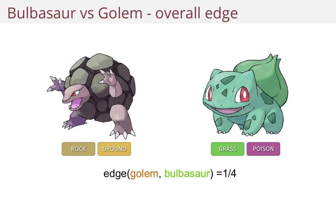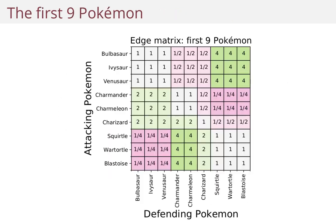Now we're going to study a very simplified problem. We're just going to look at the 9 starter Pokemon, and we'll assume that all the Pokemon available in the universe are these 9 Pokemon, and look at the overall advantage or the edge when these Pokemon meet each other.